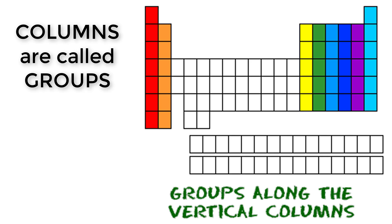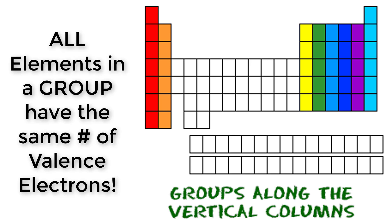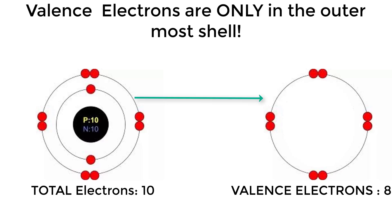The elements in each group have the same number of valence electrons. Those are the electrons in the outer shell. Those outer electrons are super important for reactivity.